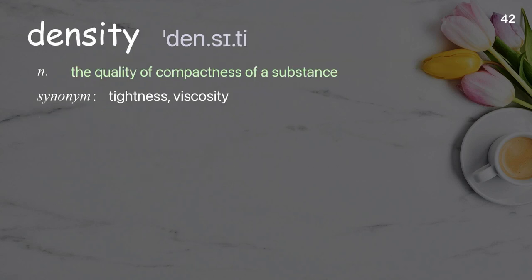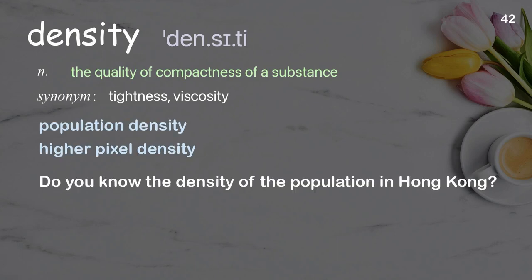Density. The quality of compactness of a substance. Examples: Population density, higher pixel density. Do you know the density of the population in Hong Kong?